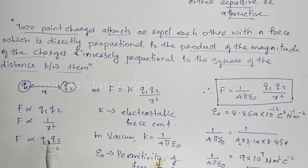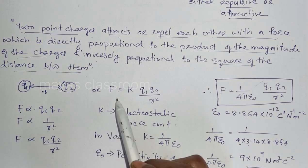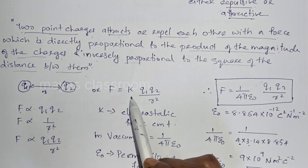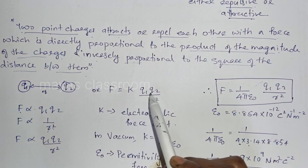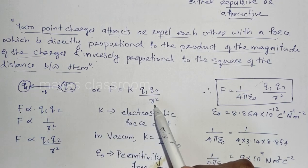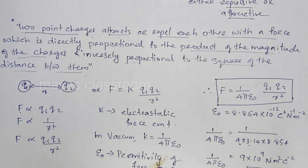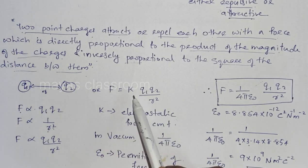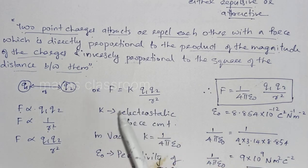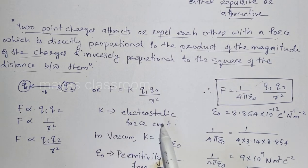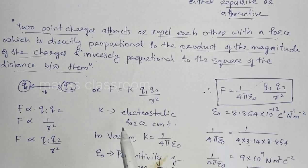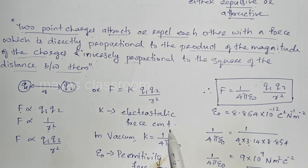We write F proportional to q1·q2 divided by r², or F is equal to a constant k into q1·q2 divided by r². This k is a constant called the electrostatic force constant.